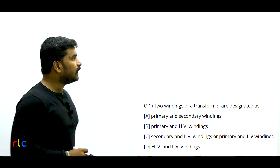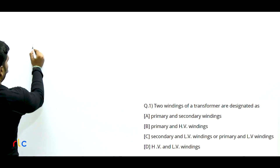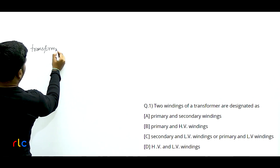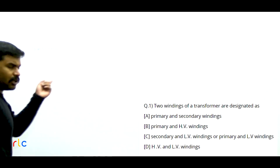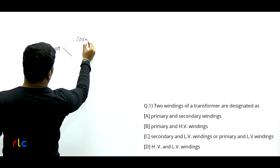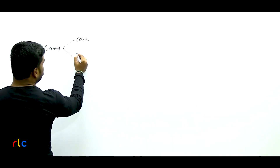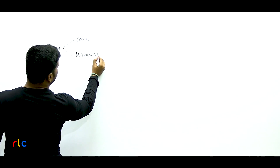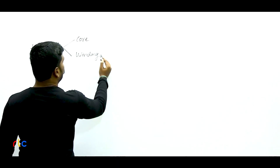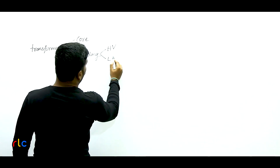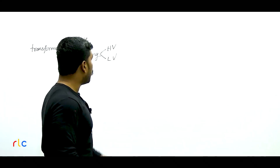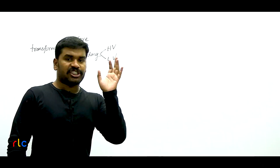This is something you should always be clear about. In transformer construction, there are only two active things that constitute a transformer: a magnetic core and windings. A minimum of two windings are required, and those two windings are called HV winding and LV winding — not primary winding or secondary winding. Any transformer will generally have HV winding and LV winding.